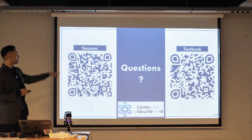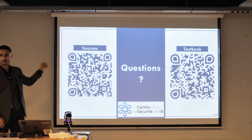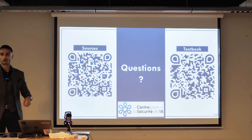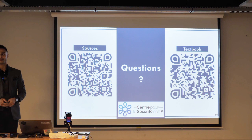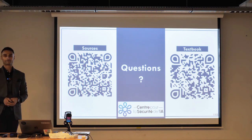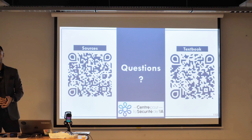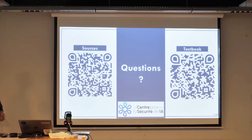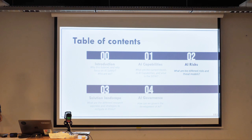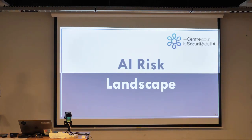Any questions so far? Sources are on the QR code to the left — if you scan it, you'll get a Zotero page showing all the papers I was talking about. Textbooks are to the right if you want to read more. If there are no questions, I'll move on directly. I hope that woke everybody up, because now we're moving on to the exciting topic of AI risks.